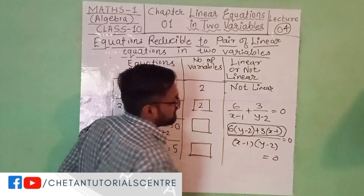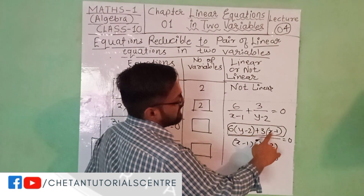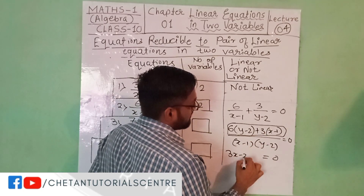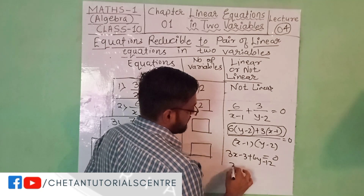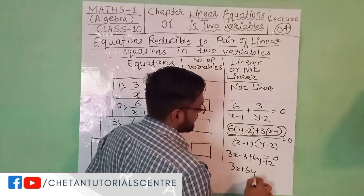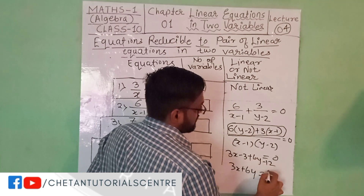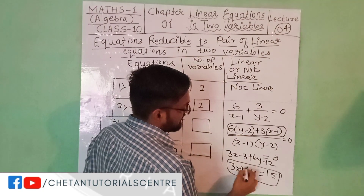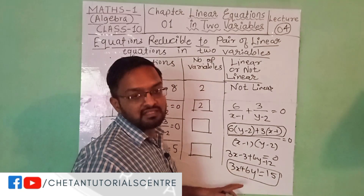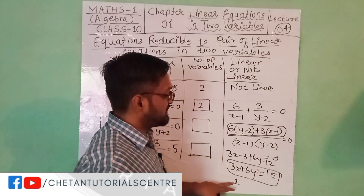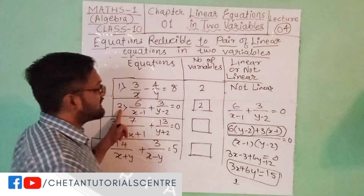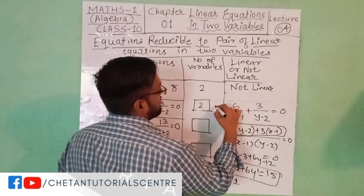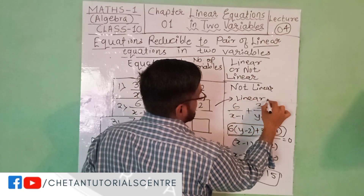Solving this equation, we get 3x minus 3 plus 6y minus 12, which gives 3x plus 6y is equal to 15. The degree of x is 1 and the degree of y is 1, so the highest power is 1. Therefore the degree of this equation is 1, meaning this is a linear equation. Question number 2's equation is a linear equation.